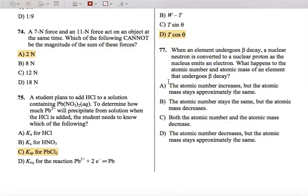So let's look for that answer choice. A says the atomic number increases, but the atomic mass stays approximately the same. That's the answer we're looking for.